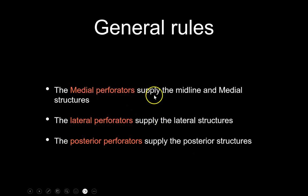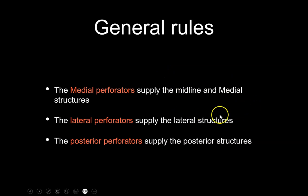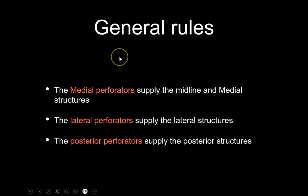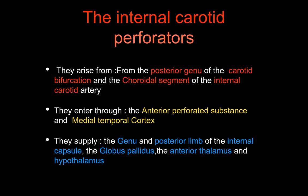A very simple general rule: medial perforators supply the midline and medial structures, lateral perforators supply the lateral structures, and posterior perforators supply the posterior structures. Most of the deep structures are the corona radiata, internal capsule, thalamus, and lentiform nucleus. You can keep these rules in mind and build your own understanding, since there is a lot of variability in the perforators — no one can tell you that you are wrong if you say it with confidence.